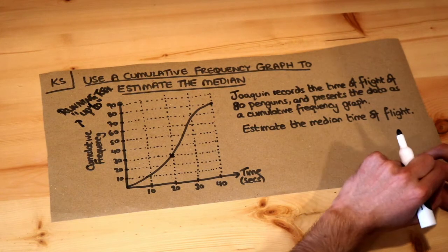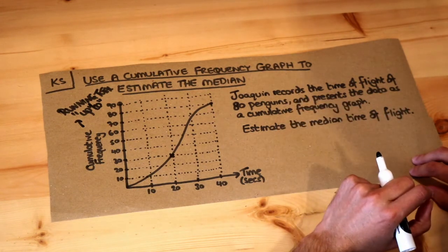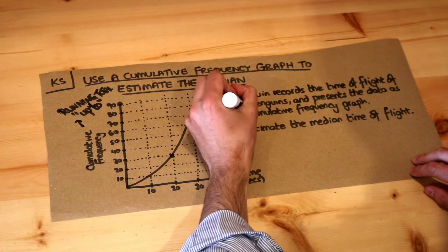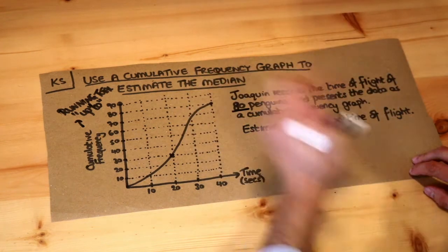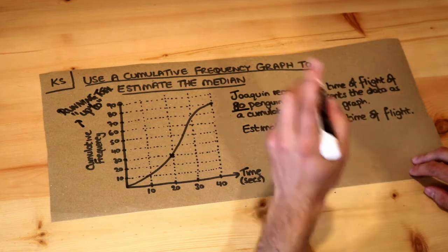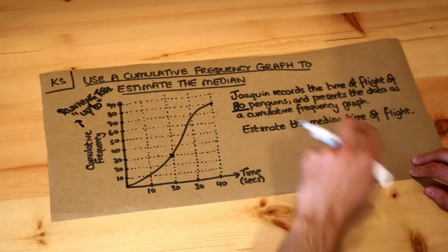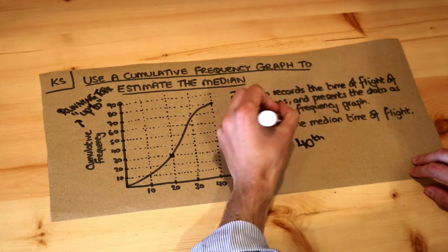Now we want the median time of flight, that means the middle person. We've got 80 penguins, so if we want the middle penguin we want the 40th penguin. We halve the 80 and the 40th penguin will be the median.